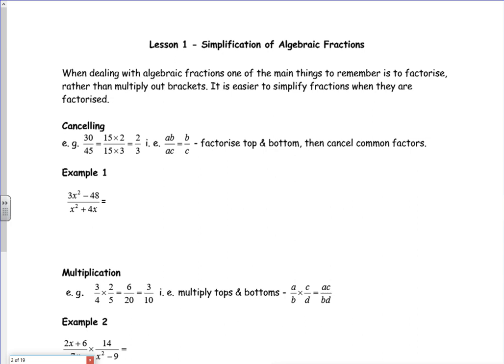Let's have a look at the first example. If you compare the top to the bottom, there's a difference of three on the top for the x squared, so I'm going to take out three on the top, and it gives me an x squared plus four x on the bottom. But if you spot that there is a difference of two squares...